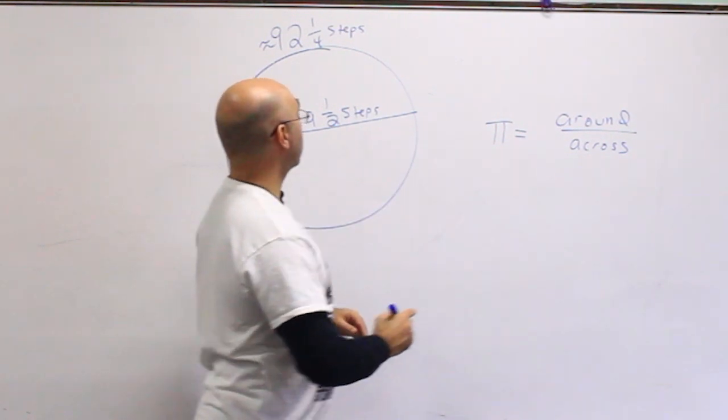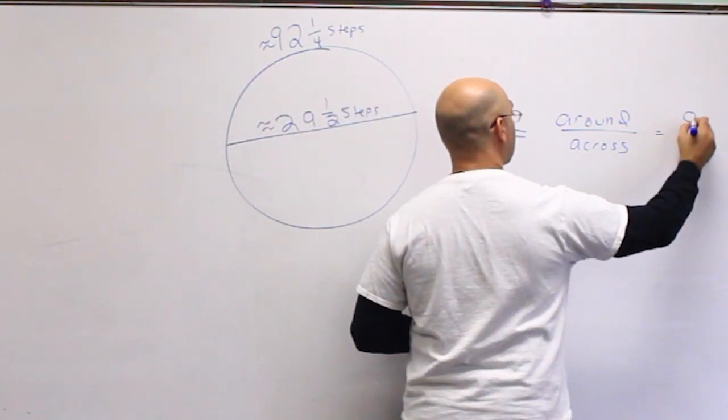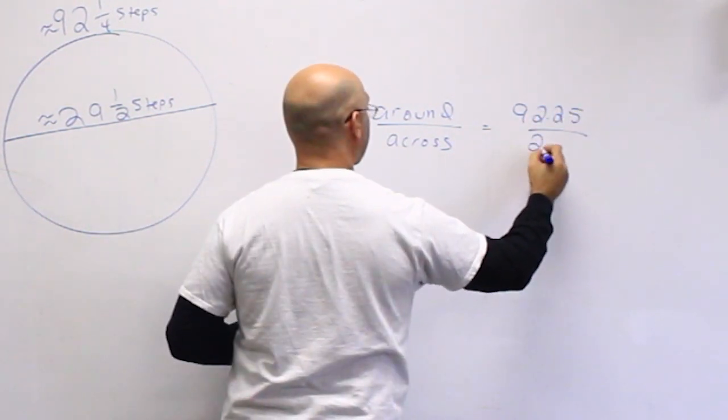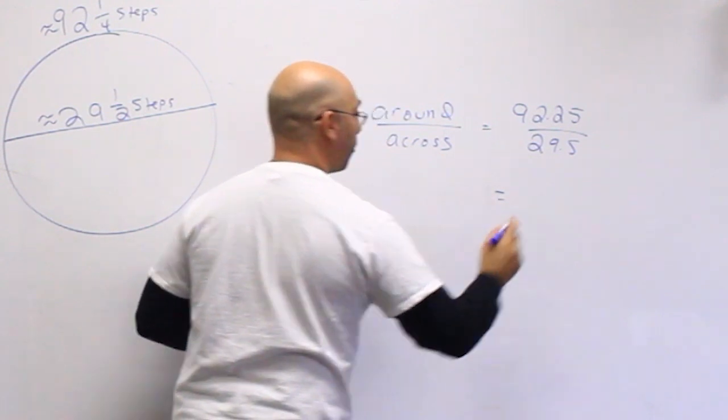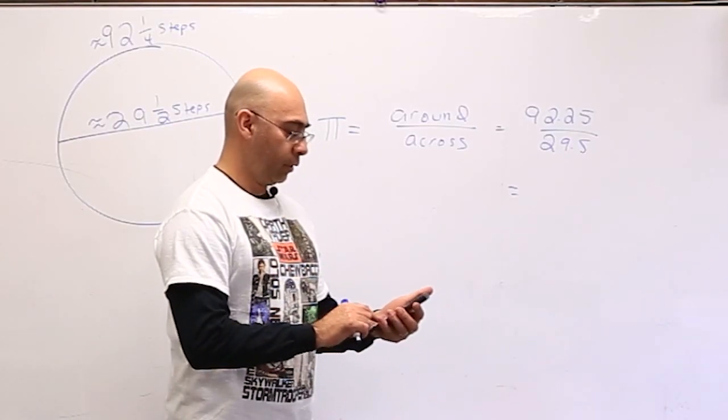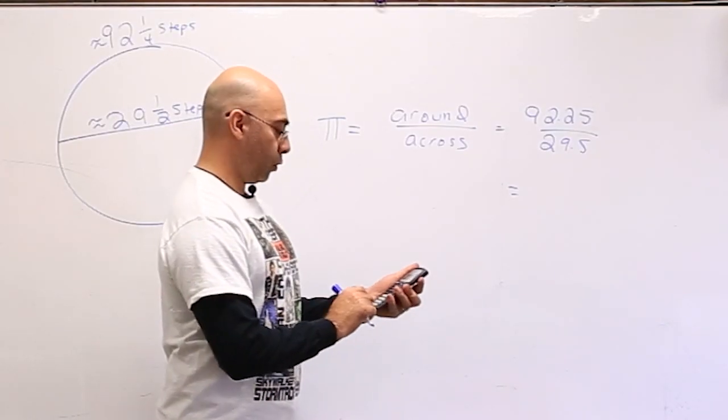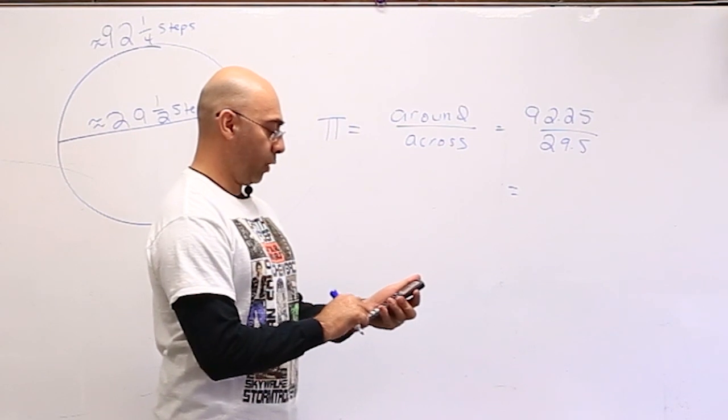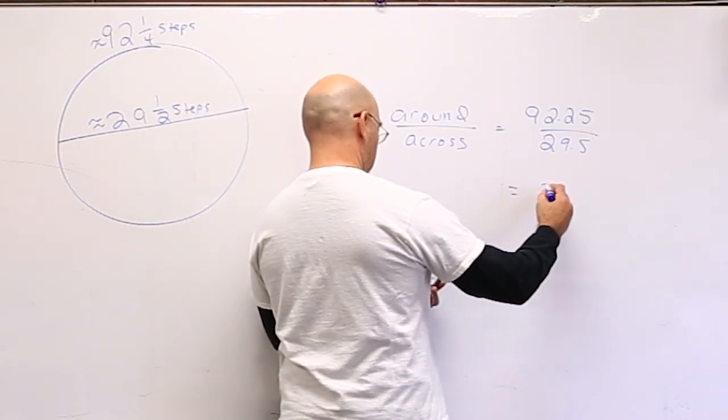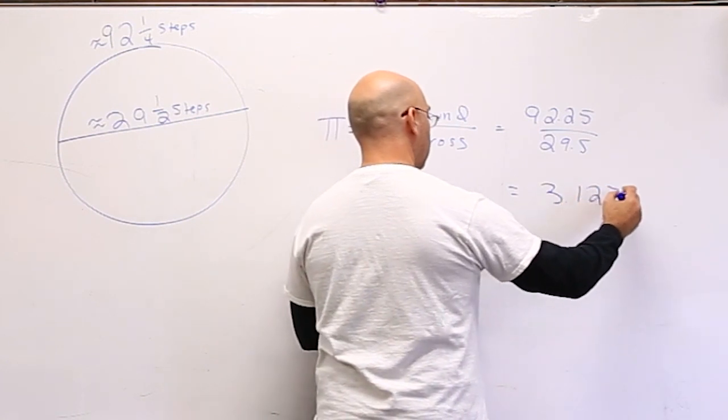I'll use my numbers here: 92.25 divided by 29.5. Using my trusty calculator, 92.25 divided by 29.5 gives me about 3.127.